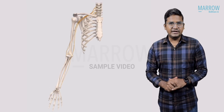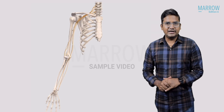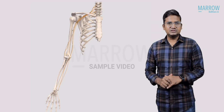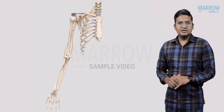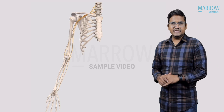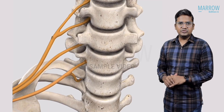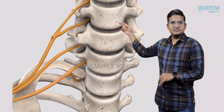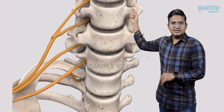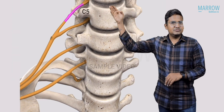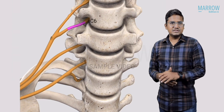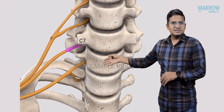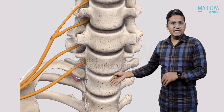We are going to see the animation for the brachial plexus. We will zoom into this area so you can see the roots clearly. There is the C5 root, C6 root, C7, C8, and T1.